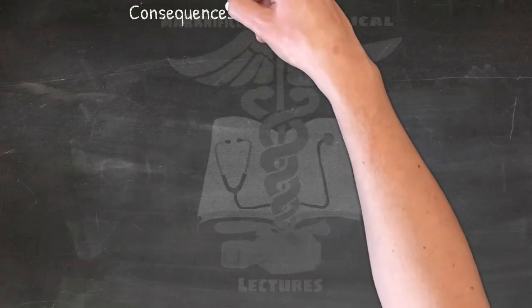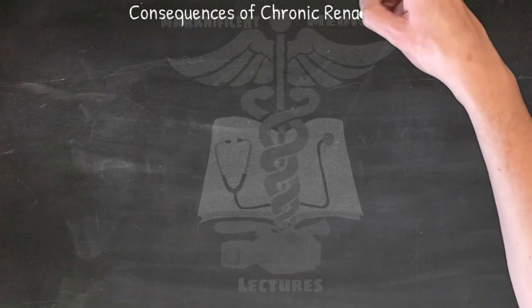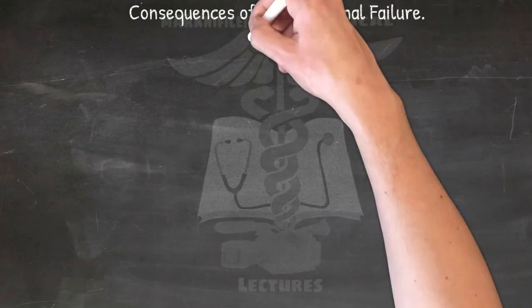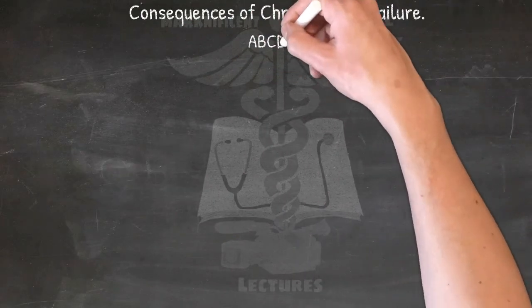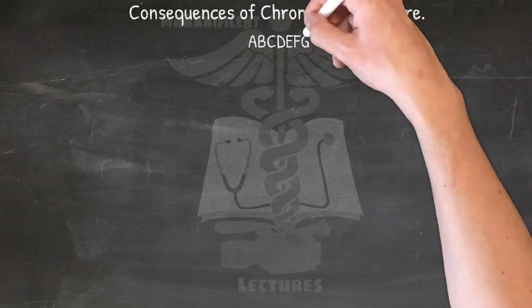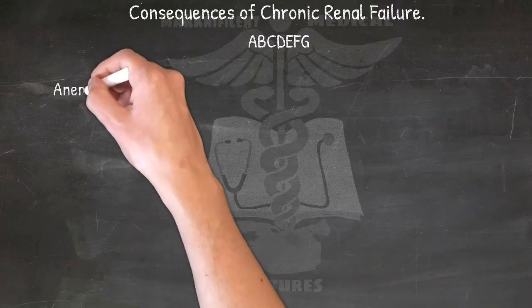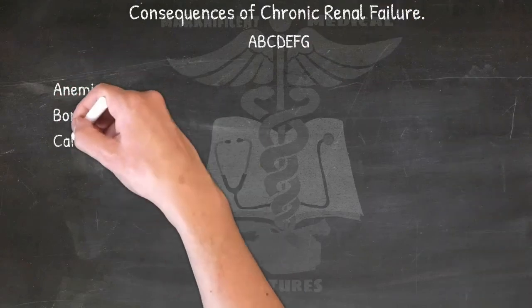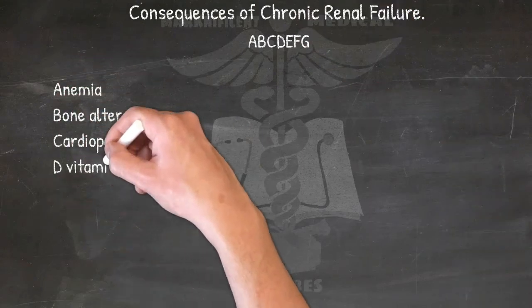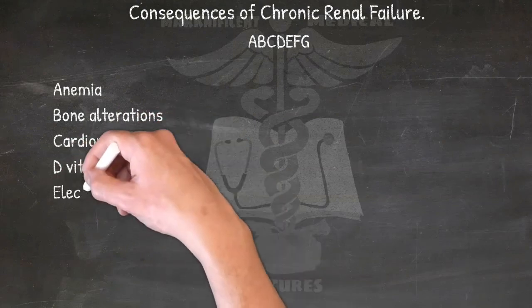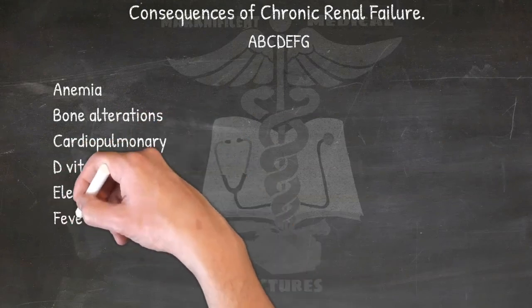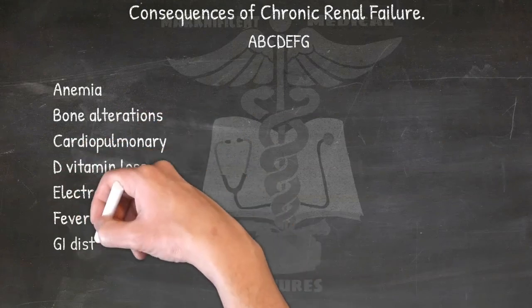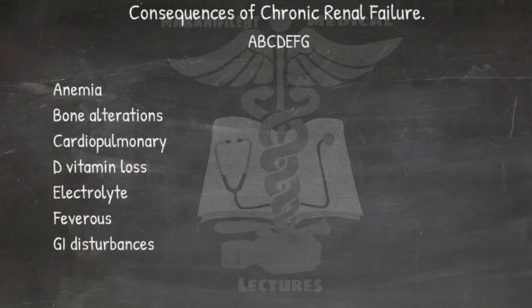Consequences of chronic renal failure: ABCDEFG — Anemia, Bone alterations, Cardiopulmonary, D vitamin loss, Electrolyte issues, Febrile, and GI disturbances.